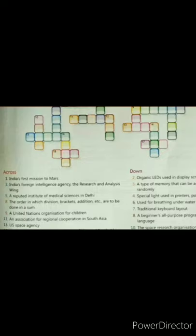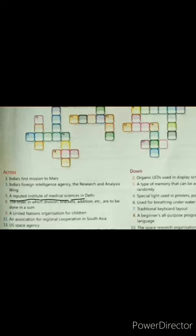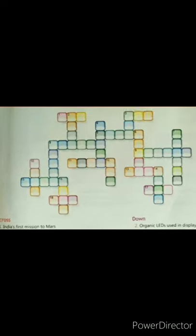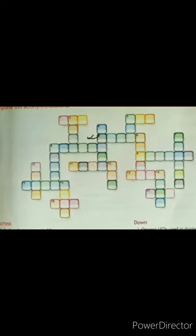Now the next clue is a reputed institute of medical sciences in Delhi. Now the answer for this one will be AIIMS, A-I-I-M-S. That is the All India Institute of Medical Sciences. Now the numbering for this one was 5. So we have to locate the number 5 in the crossword. Where is it? This one. So we will fill here AIIMS. A-I-I-M-S. So that was the answer for fifth one.